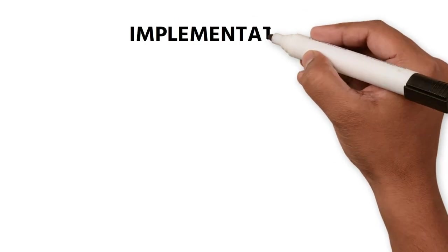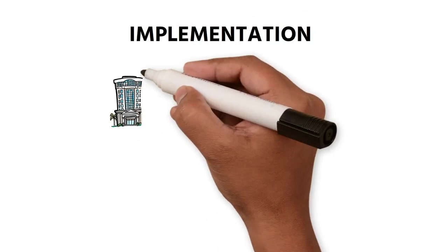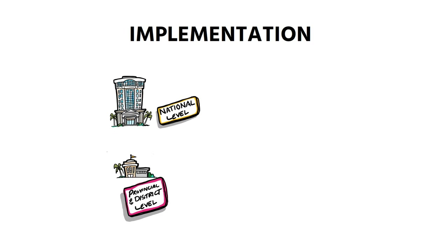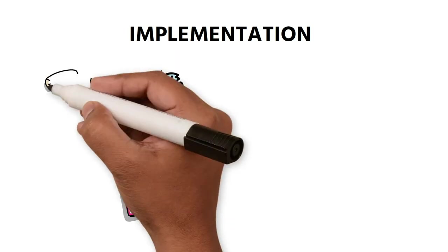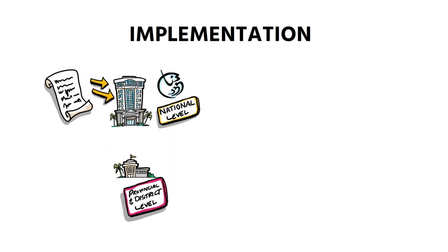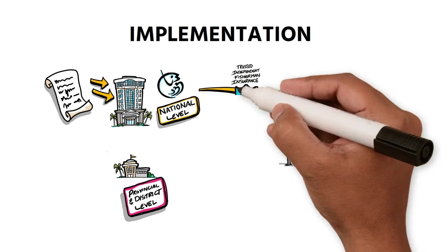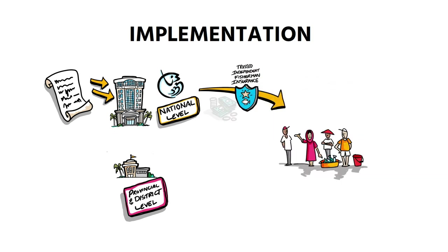In the implementation phase, different administrative levels of government are involved at national, provincial, and district levels. At the national level, the policy is implemented by the Ministry of Maritime Affairs and Fisheries under a dedicated regulation. The Ministry established instruments to reach fisherfolk, including the trusted independent fisherman insurance programme and other loans to provide funding for the development and diversification of fishing businesses.